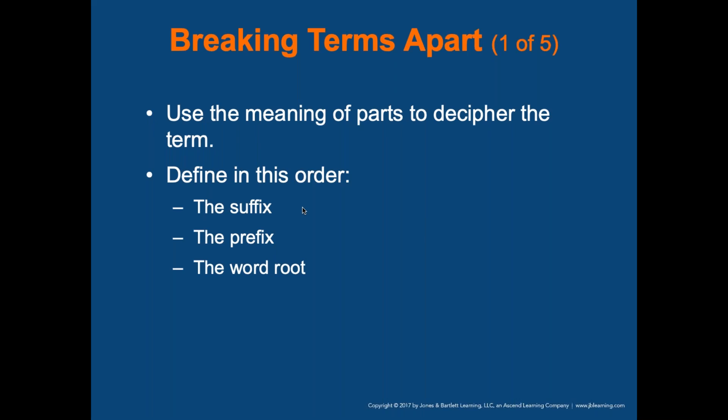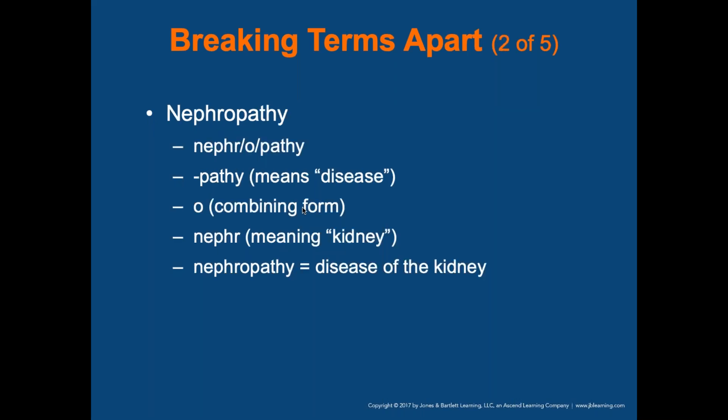To break terms apart, define them in this order: suffix, prefix, and word root. For example, 'nephropathy': '-pathy' means disease, '-o' is a combining form, and 'neph' means kidneys. Nephropathy is a disease of the kidney itself. Breaking it down further, 'nephron' refers to the functional unit of the kidney — we'll get into more detail when covering the renal system.